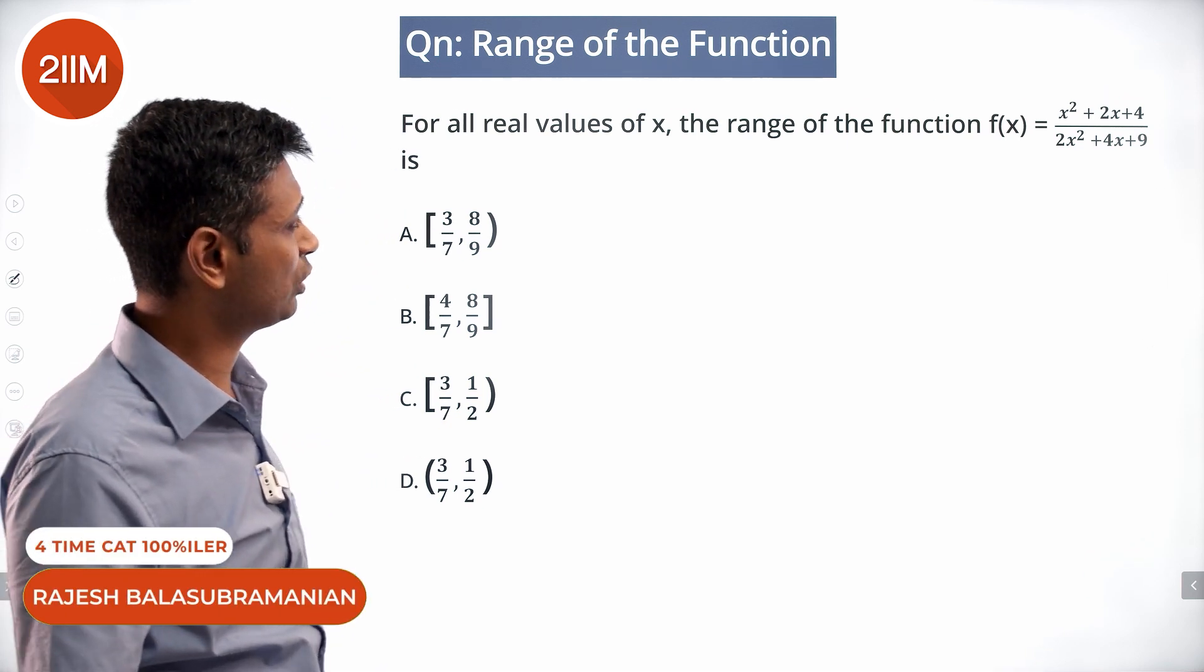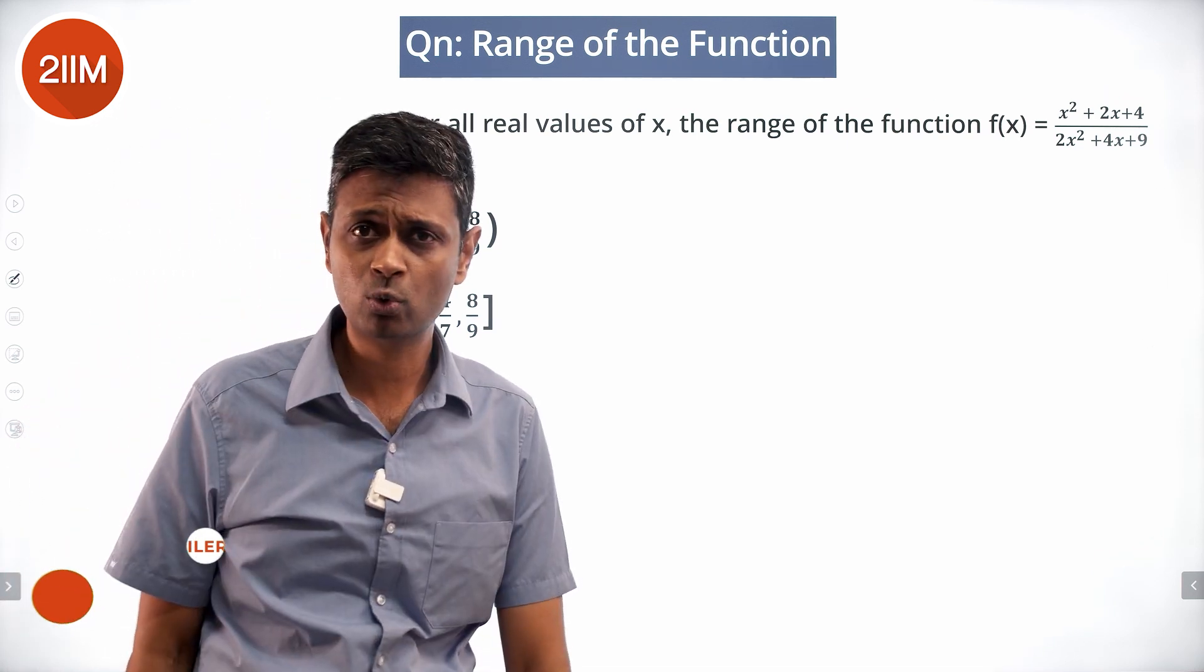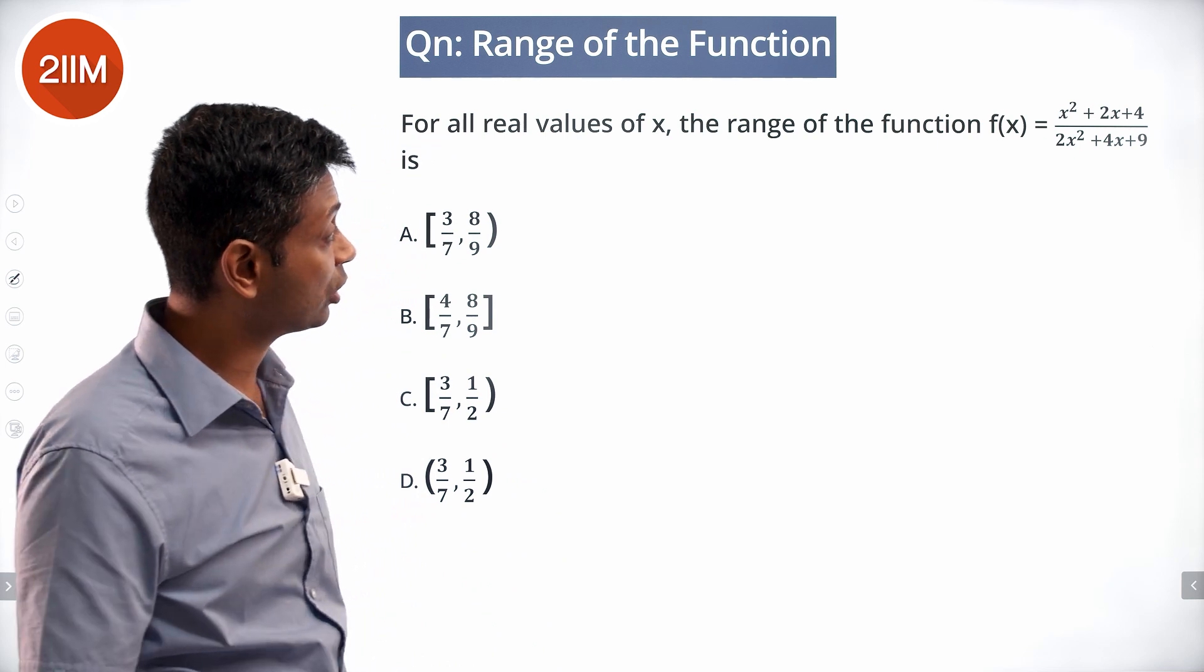For all real values of x, the range of the function x square plus 2x plus 4 by 2x square plus 4x plus 9.